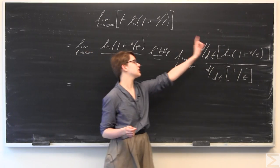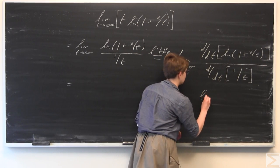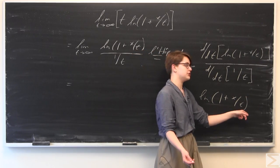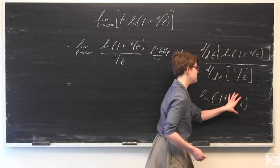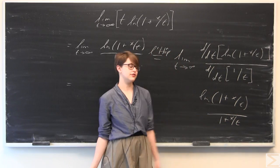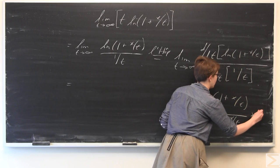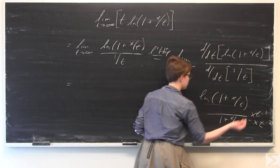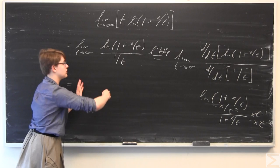We're differentiating with respect to t, not with respect to x. When we differentiate the numerator ln(1 + x/t), we need to use the chain rule. Differentiating the exterior function ln gives 1 over (1 + x/t). Then we differentiate the interior function: the 1 goes to 0, and x/t equals x·t⁻¹, so its derivative with respect to t is negative x·t⁻². This gives us negative x over t² in the numerator.